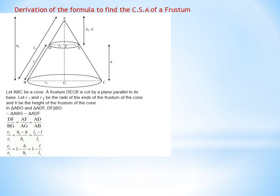AD divided by AB (hypotenuse of smaller cone divided by hypotenuse of bigger cone) equals AF divided by AG (height of smaller cone divided by height of bigger cone) equals DF divided by BG (radius of smaller cone divided by radius of bigger cone). Therefore: R2/R1 = (H1−H)/H1 = (L1−L)/L1.